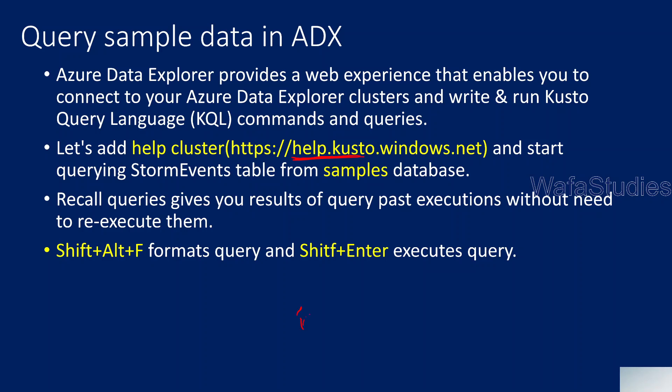In our last video, we ingested some sample data using Azure Open Blob — a particular StormEvents CSV file. So we can still work on the same table and same database. But I will also show you the help cluster. This cluster already has so many databases with so much sample data we can directly use, and it also has data for the StormEvents table as well — it is there in the samples database.